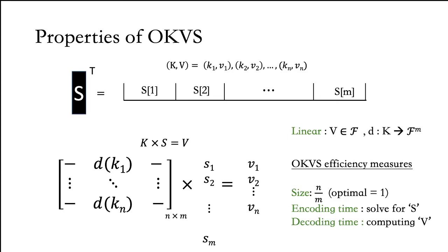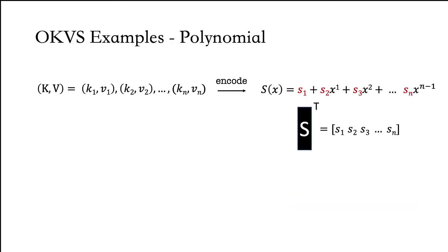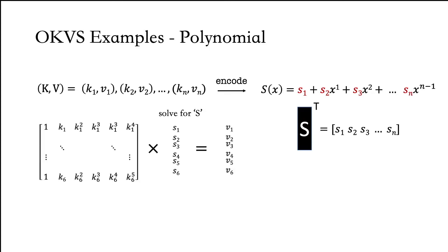A special case of the linear OKVS is a binary OKVS, where the elements of matrix K consist of binary values 0 and 1. Our first example of an OKVS is a polynomial. We can encode a set of n key-value pairs into a polynomial S that satisfies the constraints of these key-value pairs — that is, if you evaluate this polynomial on key K1, the result is value 1. The coefficients of this polynomial form the OKVS, and we can represent the encoding and decoding in terms of matrix multiplication. To decode a specific key, we look at the row in matrix K associated with that key and compute the dot product of that row with the OKVS S.